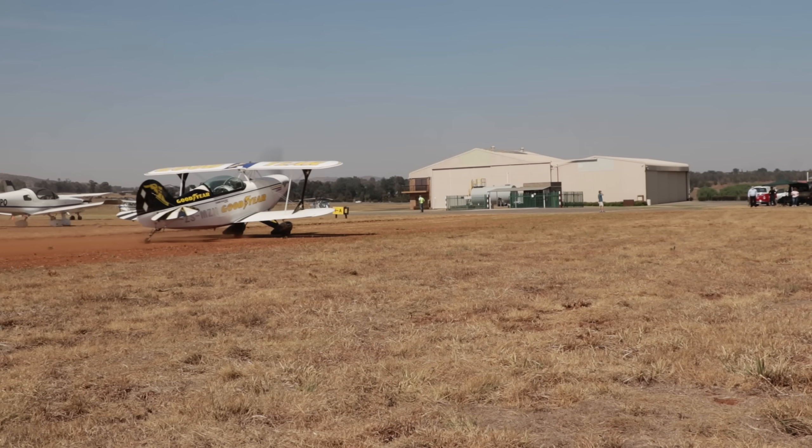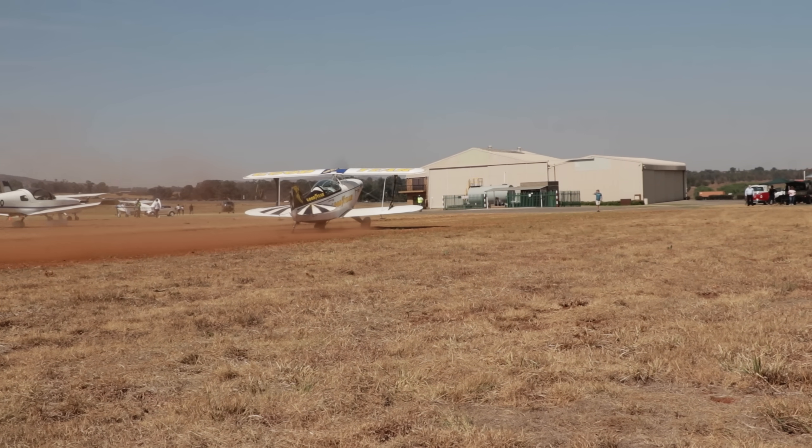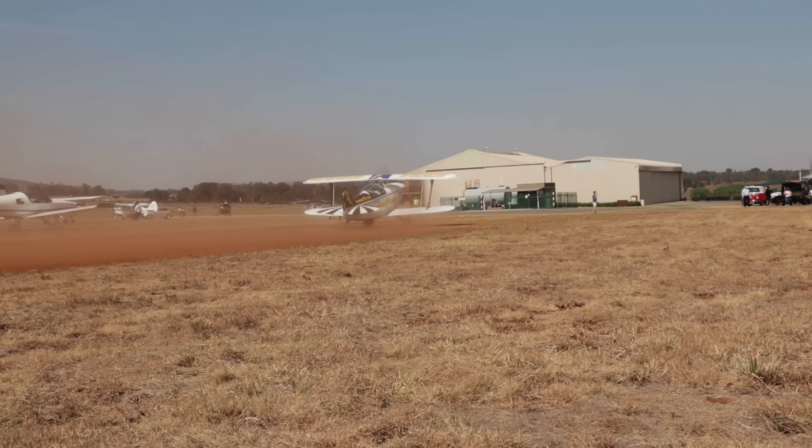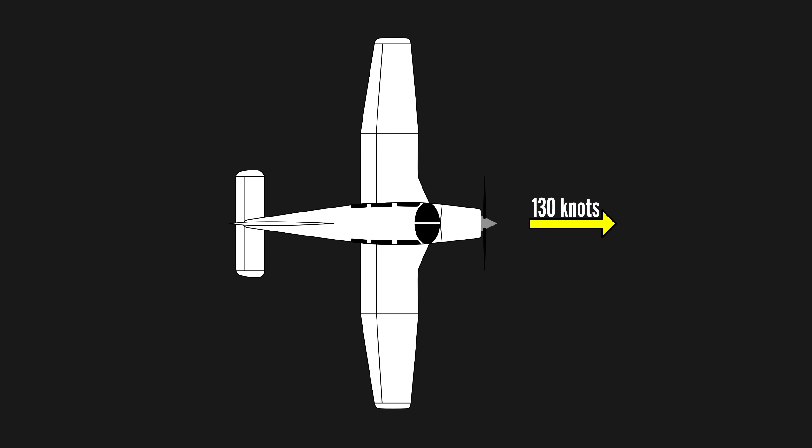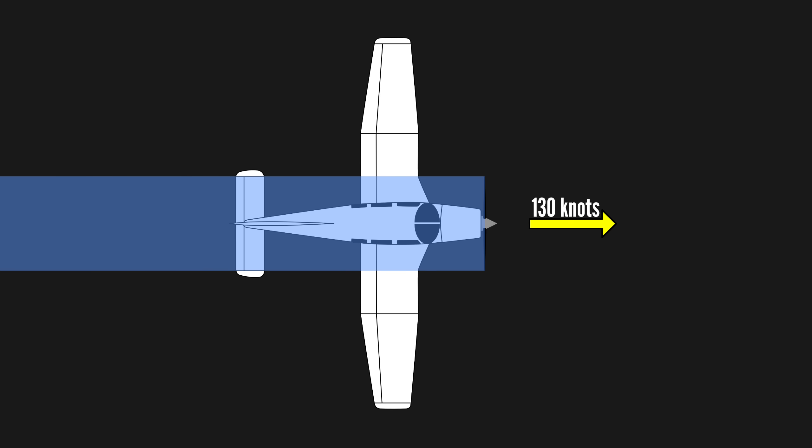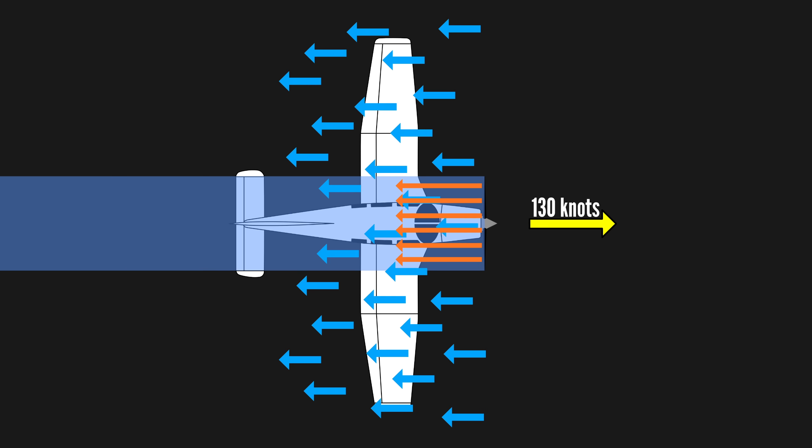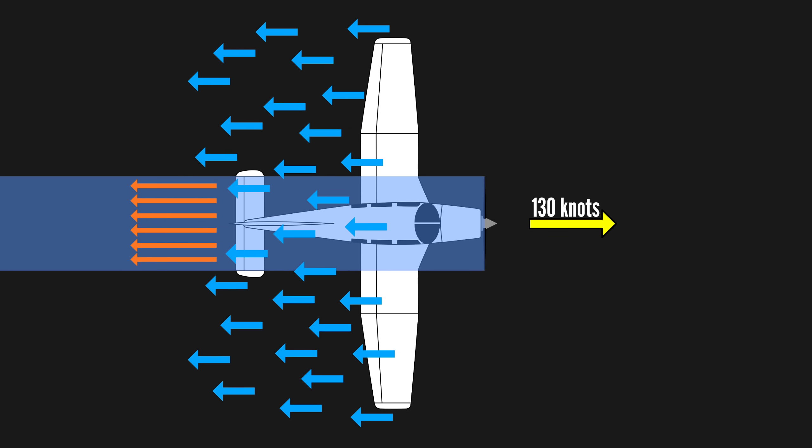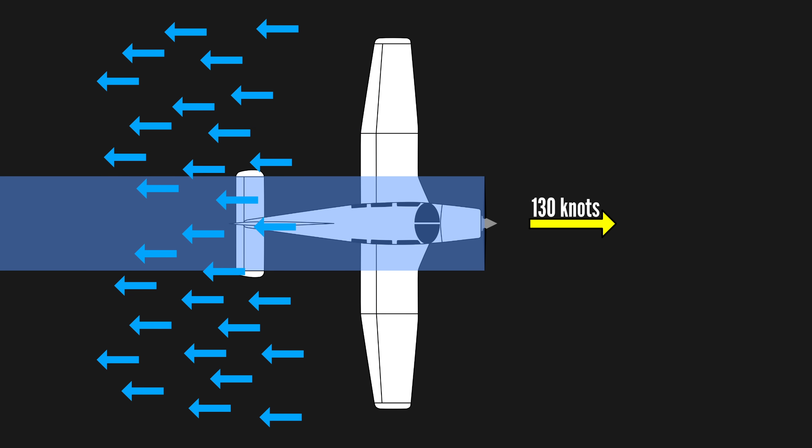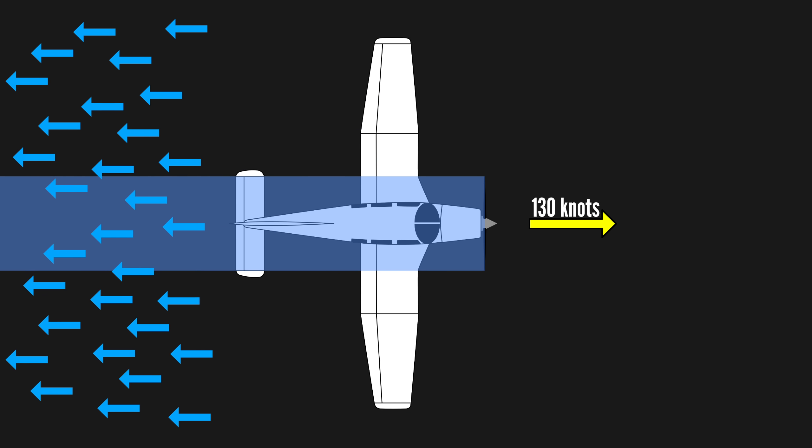If you don't think a propeller blows air back, just look at an aircraft taxiing on a dusty gravel surface. Even at cruise speed flight, the air pushed back by the propeller, called the slipstream or prop wash, moves faster than the surrounding freestream air. This clearly shows that propellers blow air backward like fans do.